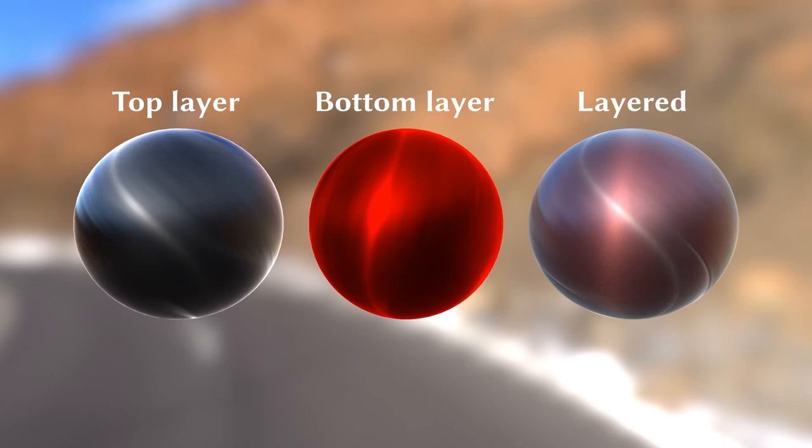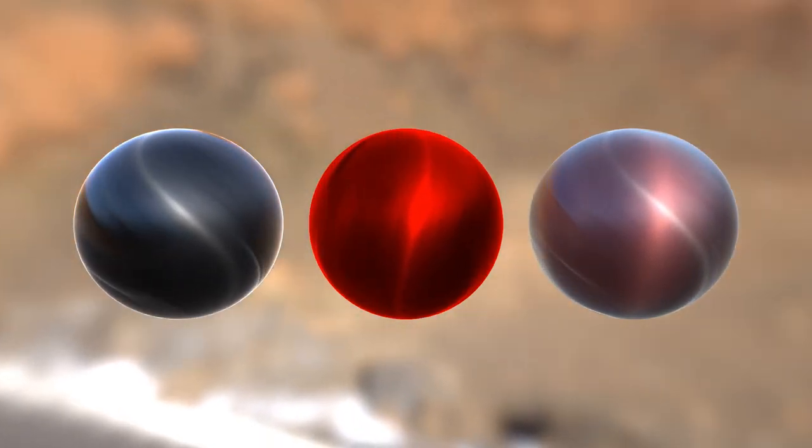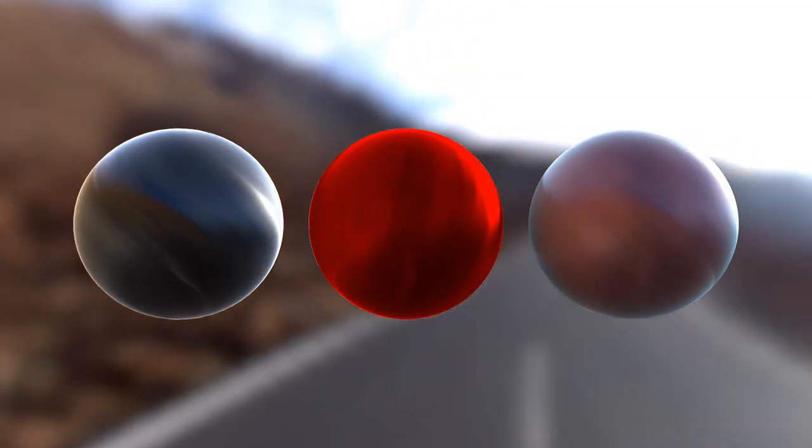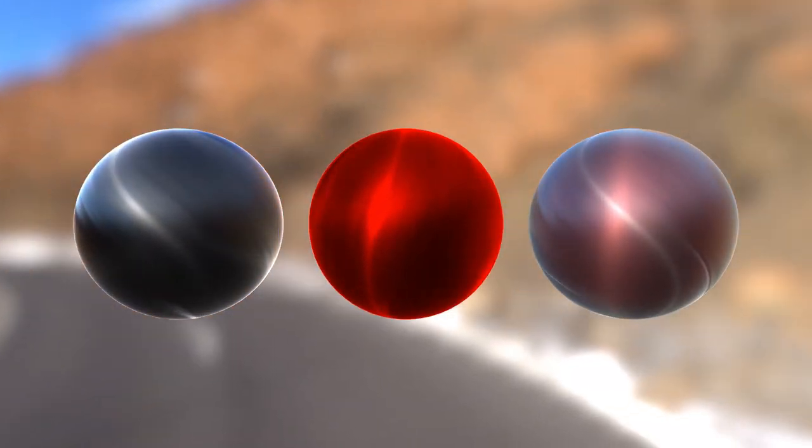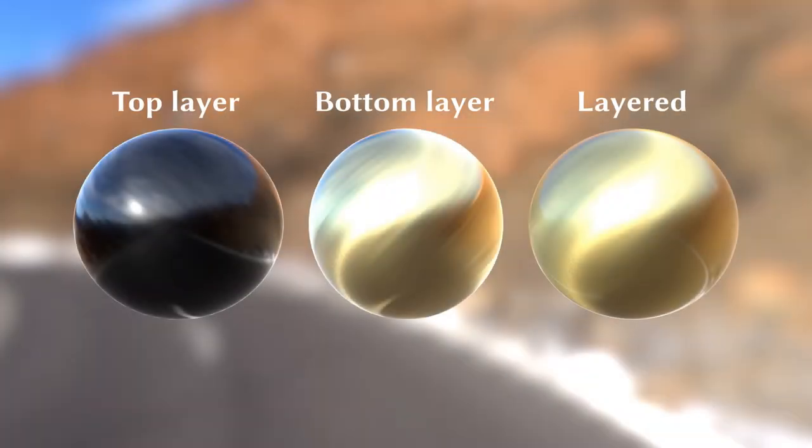In the next movie, the material is the same as the previous one, but the environment light moves around the balls. This is a movie for a rough golden material covered by a rough clear coat.